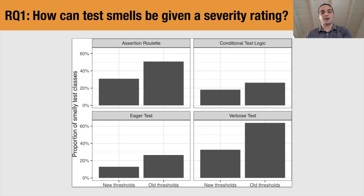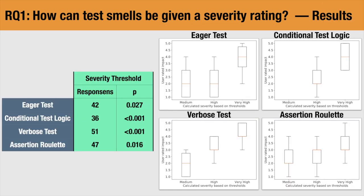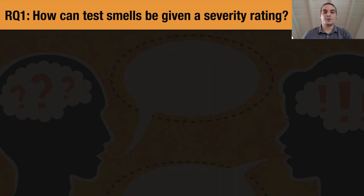Hence, when we ran the study in Better Code Up for RQ2, we inserted a question to validate our thresholds and asked developers to rate, according to them, the severity of the test smell instance. This is the result. In the graphs, on the x-axis we have the three thresholds — medium, high, and very high — and on the y-axis we have the severity reported by the users as a Likert scale. As you can see, especially for conditional test logic and verbose tests, there is a clear correlation between our thresholds and the user-perceived severity. For the other two smells, the correlation is still present but weaker. Hence, we can assert that our severity thresholds are aligned with developers' perception of severity.